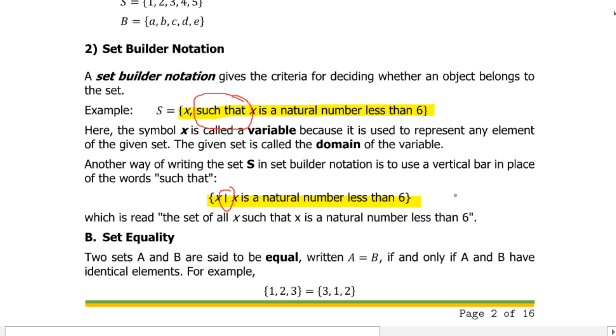How do we know if two sets are equal? Two sets A and B are said to be equal, written A equals B, if and only if A and B have identical elements. For example, the set with elements 1, 2, 3 is equal to the set with elements 3, 1, 2. Although the elements are written in different order, they are still identical because all the elements are the same.